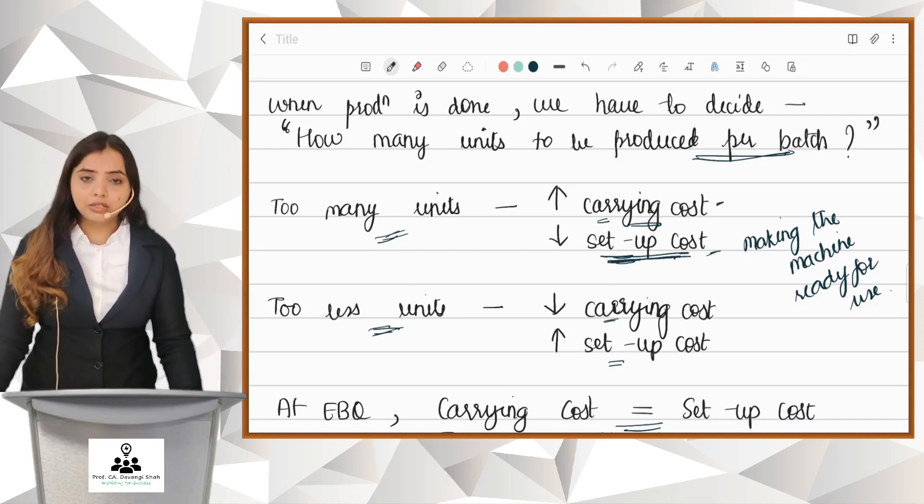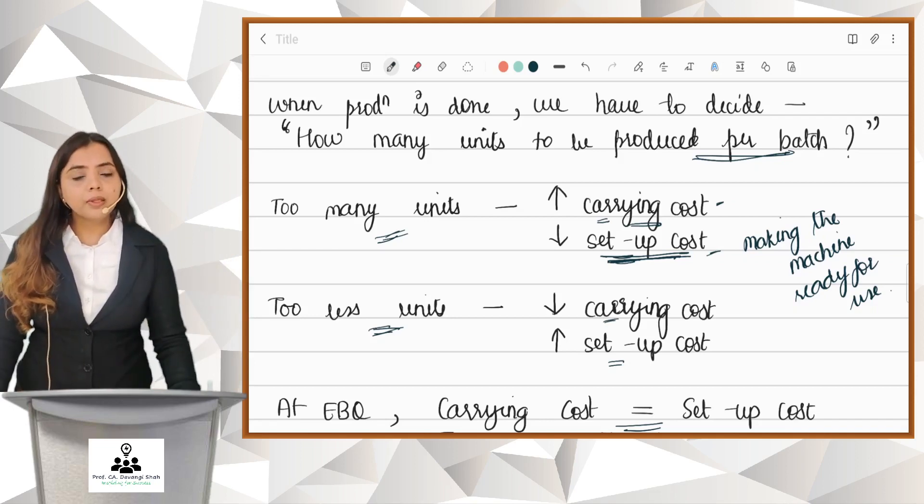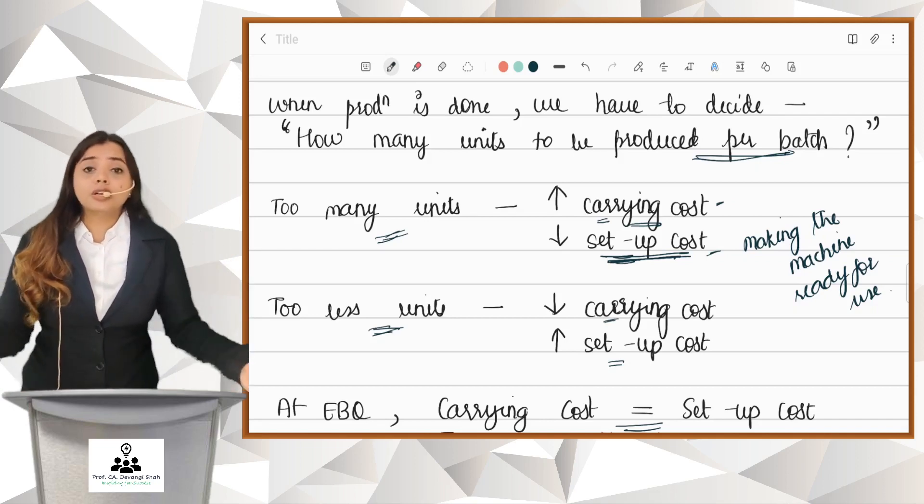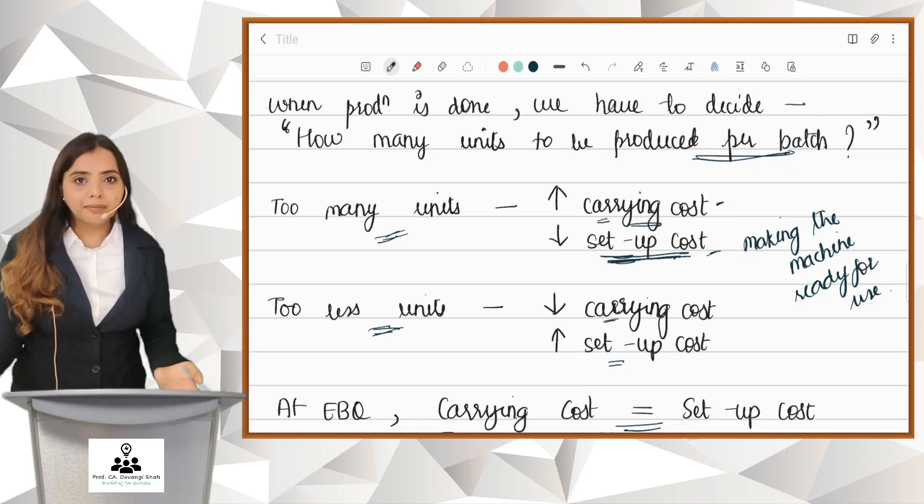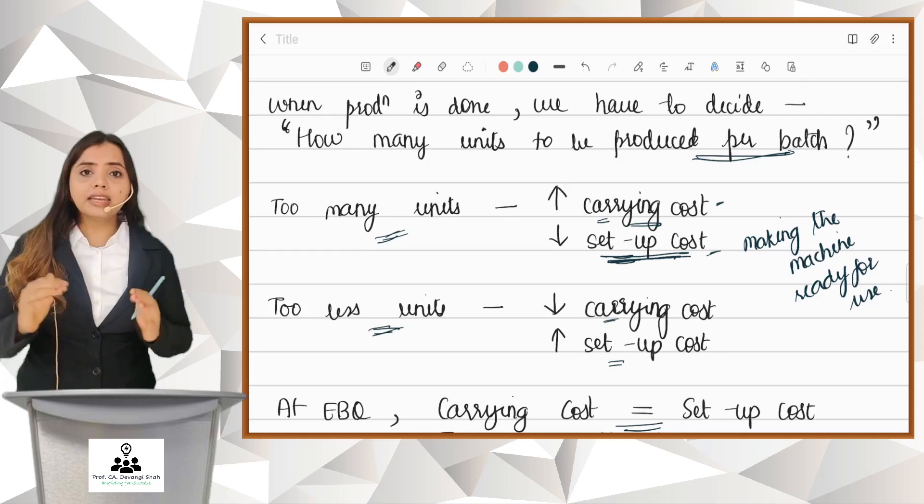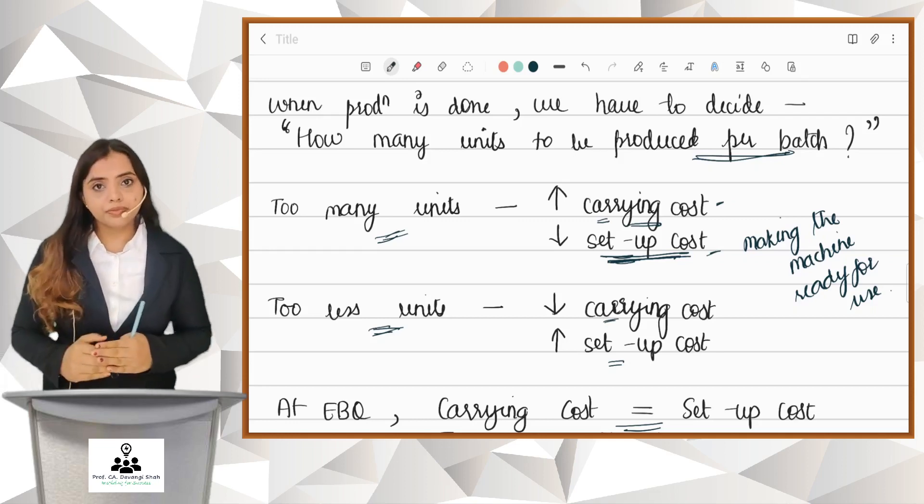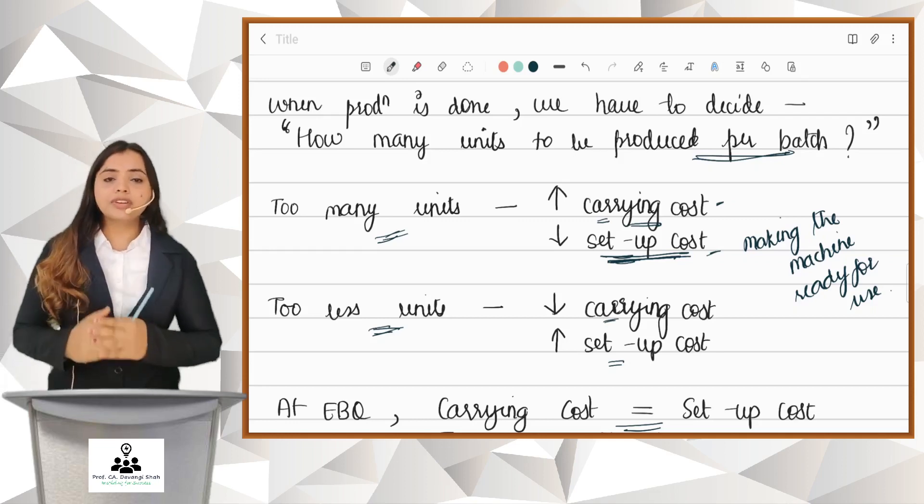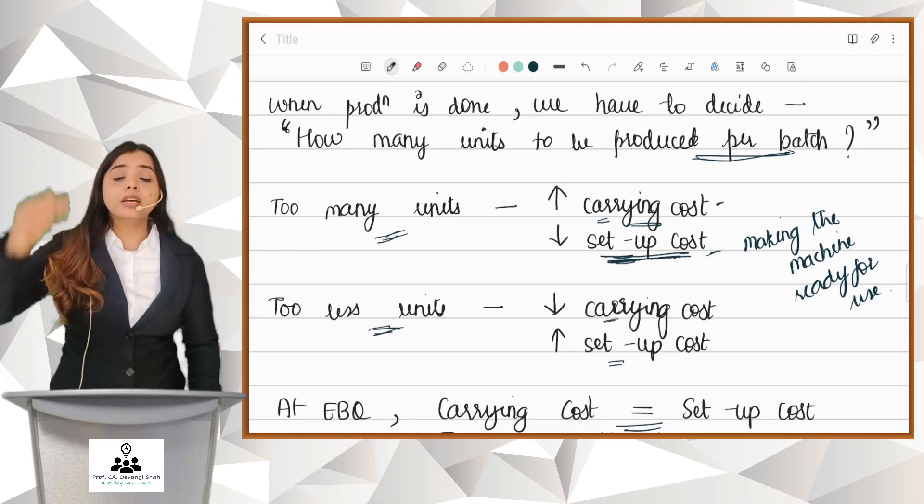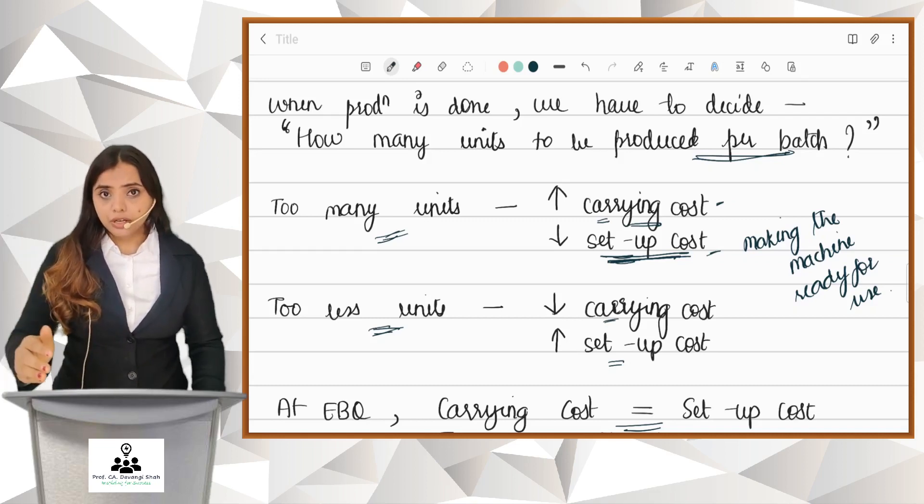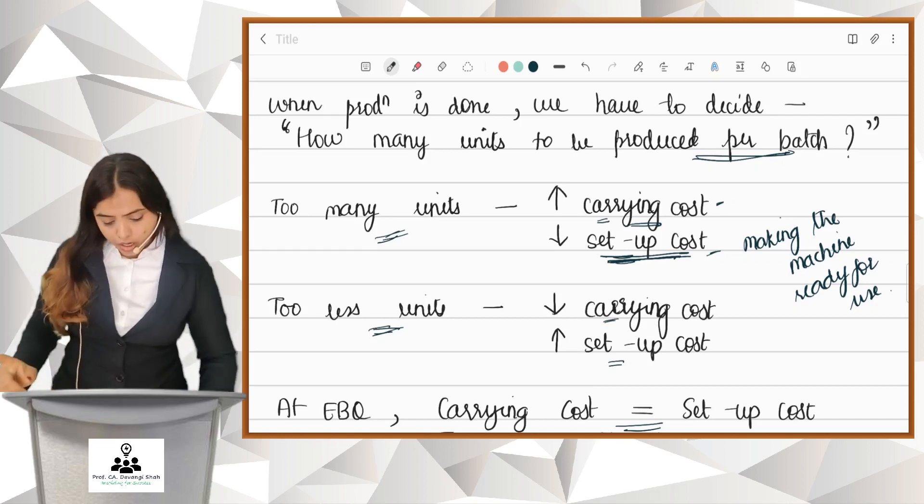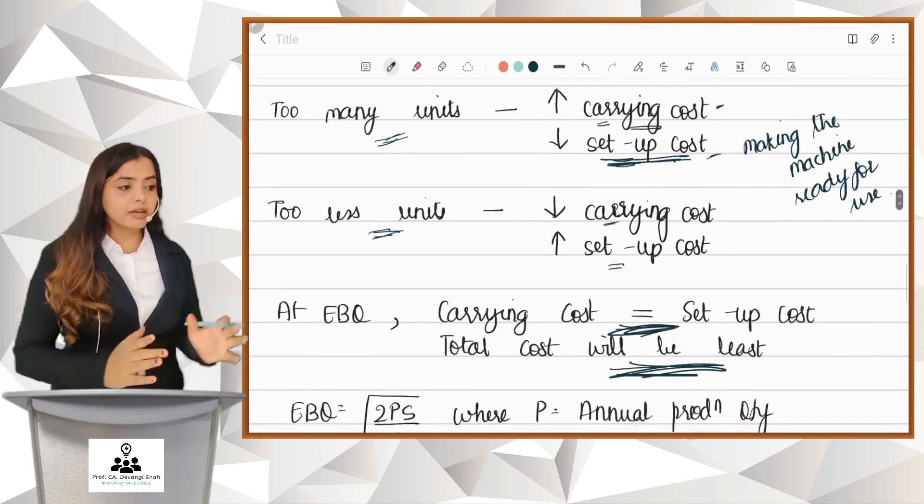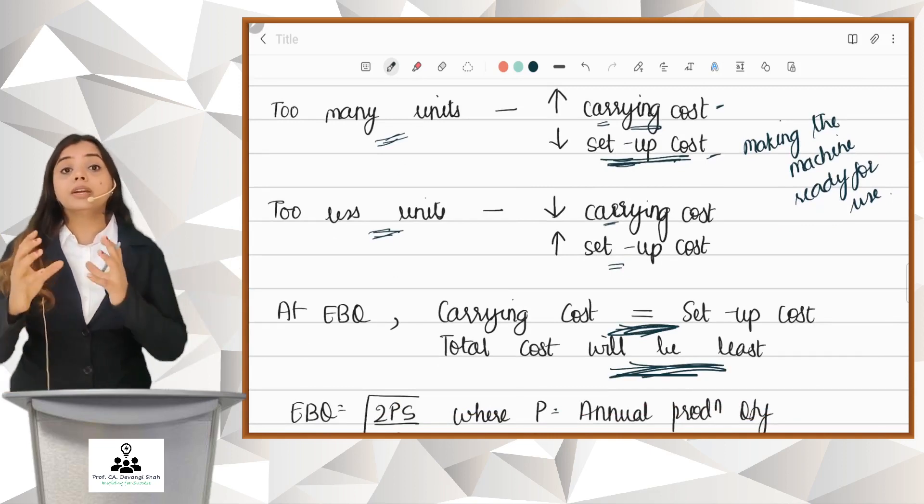In that case, you have to take this as your decision. You do not have to think about which cost is more, setup or carrying. Cost is cost, whatever be the name. You have to try and minimize your total cost. You have to produce that many units in a batch that will minimize your total cost. And your total cost will be least when these two costs, carrying cost and setup cost, are equated.